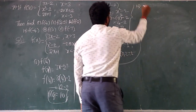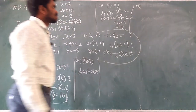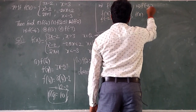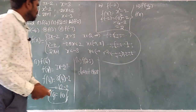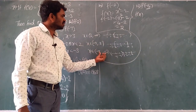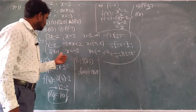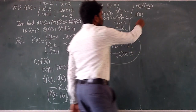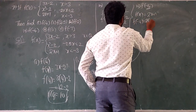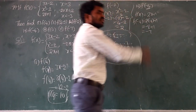f of minus 2: x equals minus 2 is in between minus 2 and plus 2, so the function is x squared minus 2. f of minus 2 equals minus 2 squared minus 2 equals 4 minus 2 equals 2.